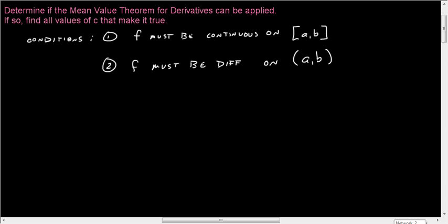It says that if these things are true, then there exists a C in the open interval (a,b).